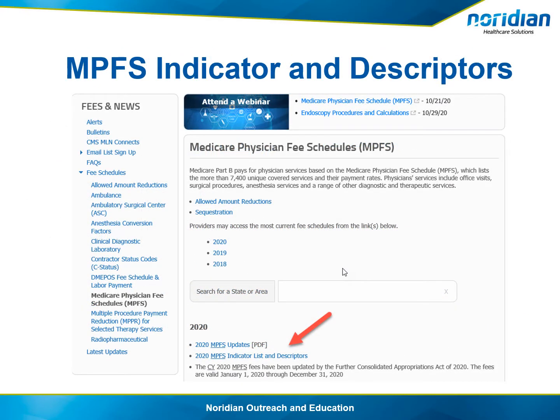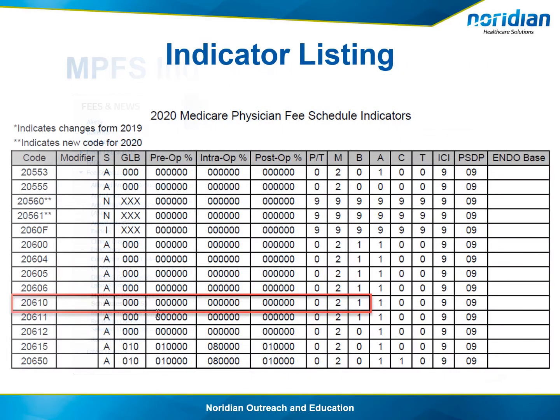Select MPFS Indicator List and Descriptors. When the new window opens, select Indicator List PDF. The document will open — scroll down until you find the code you're interested in and look for the indicators under M for multiple or B for bilateral. Here we see under M indicator 2 and under B indicator 1.